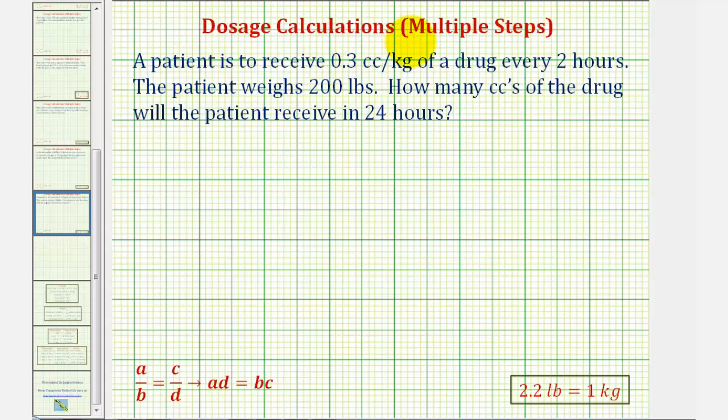Welcome to a dosage calculation that requires multiple parts. A patient is to receive 0.3 cc's per kilogram of a drug every two hours. The patient weighs 200 pounds. How many cc's of the drug will the patient receive in 24 hours?